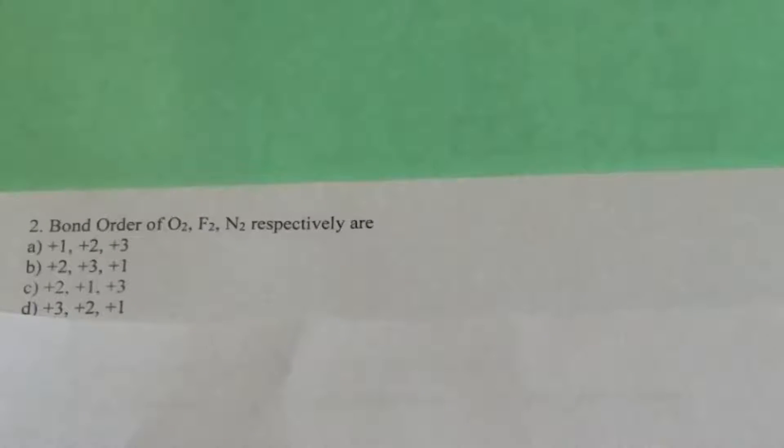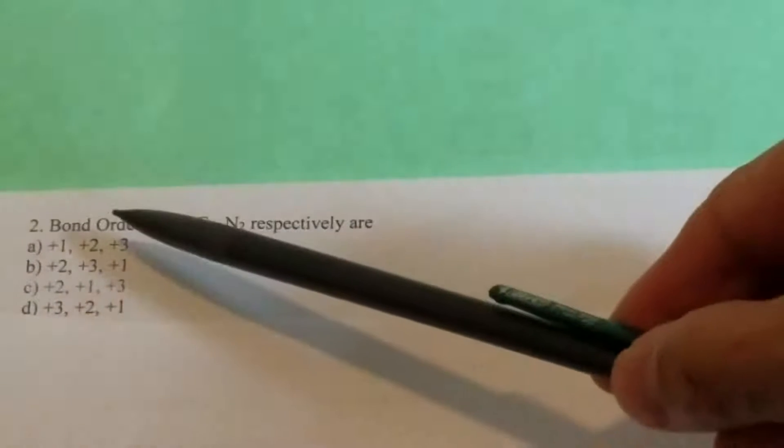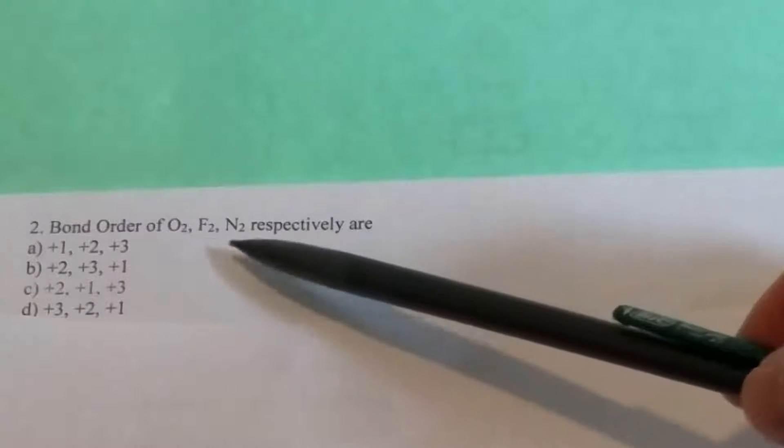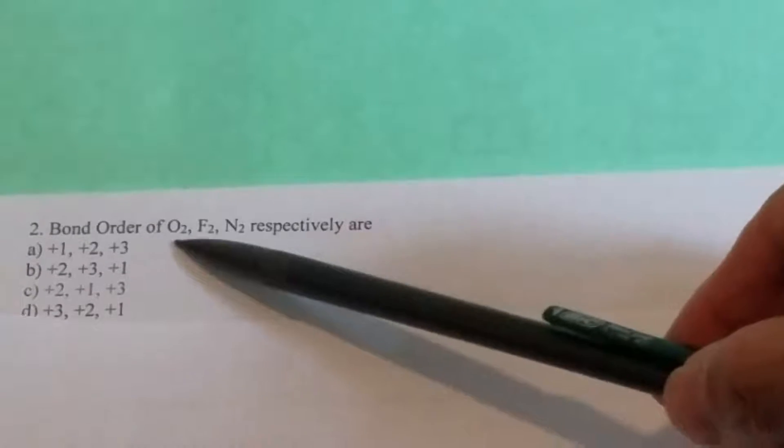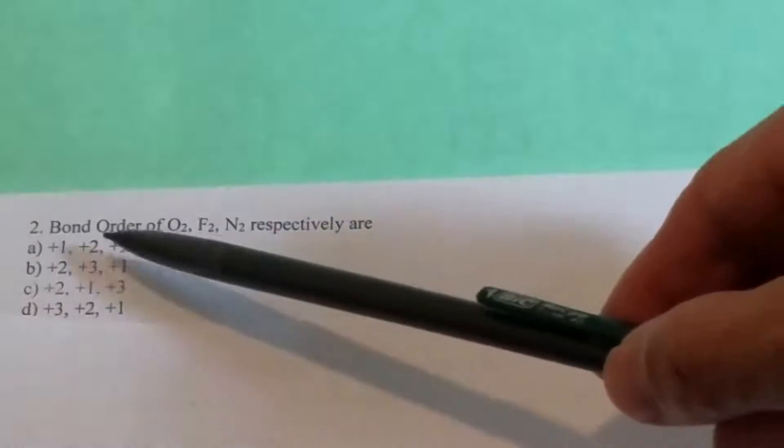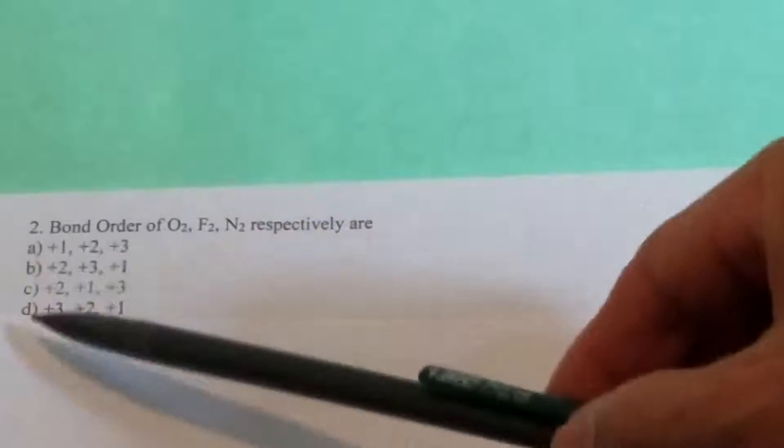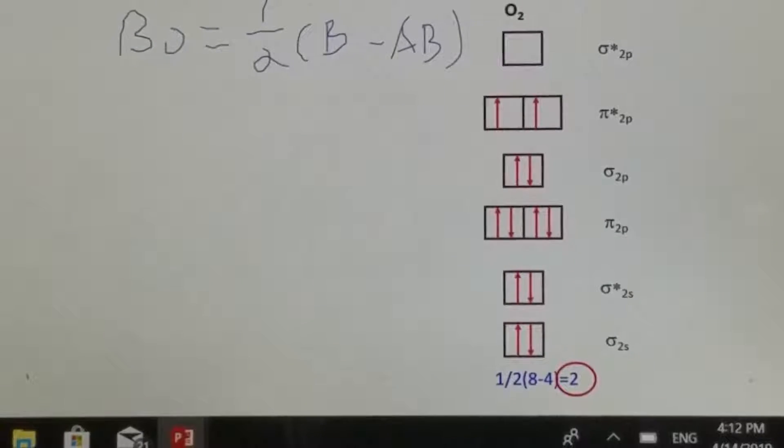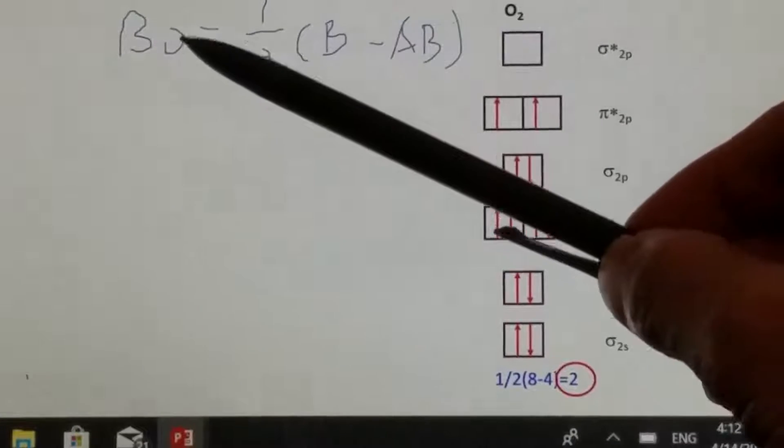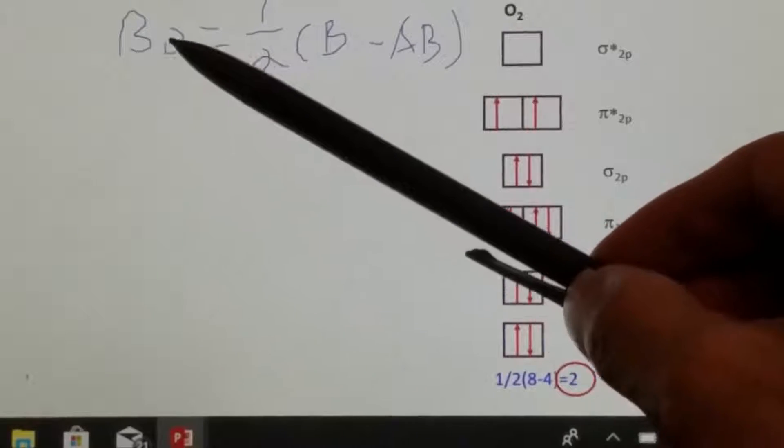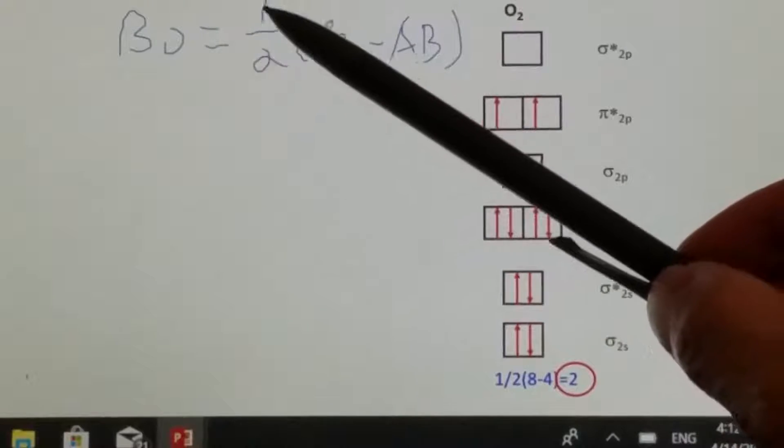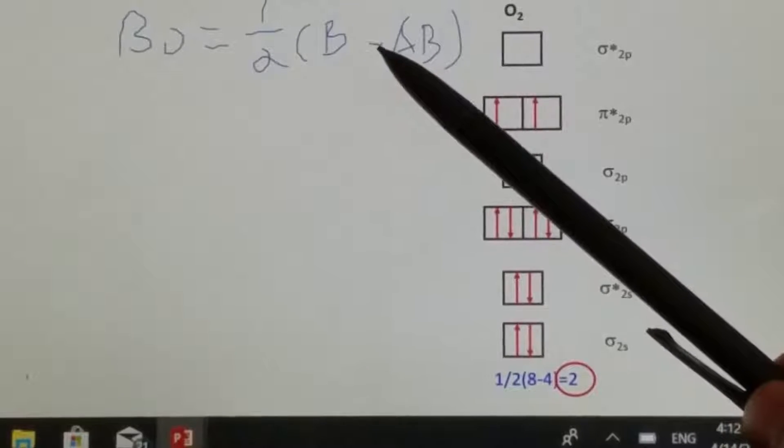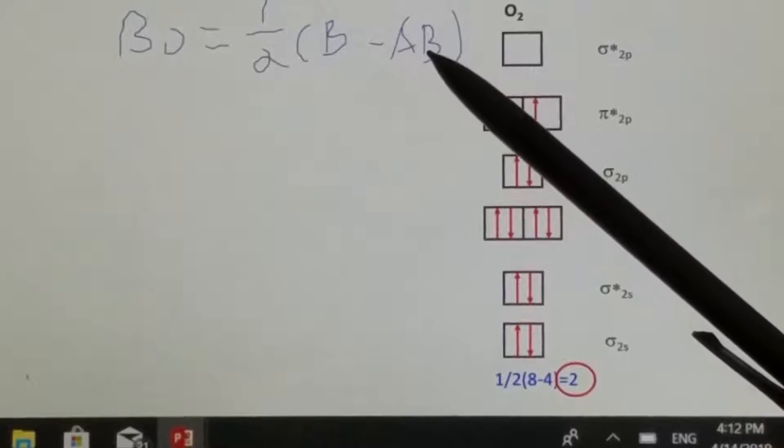For this question, we need to find out the bond order for those three molecules. Then we should be able to choose the correct choice. This is the equation for calculating bond order: that equals one half of bonding electrons subtracted by anti-bonding electrons.